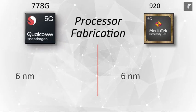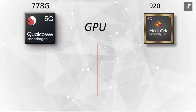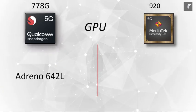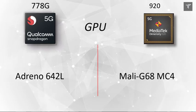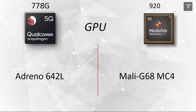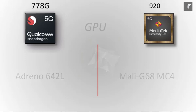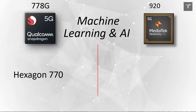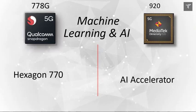Talking about the GPU for gaming, both are from different manufacturers — the Snapdragon comes with the Adreno 642L, whereas the Mediatek comes with the Mali-G68 MC4 GPU. On the machine learning and AI side, the Snapdragon 778G comes with the Hexagon 770, but the Mediatek has an AI accelerator whose exact specifications have not been defined yet.